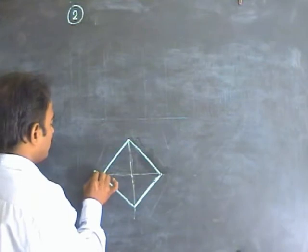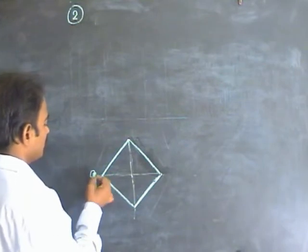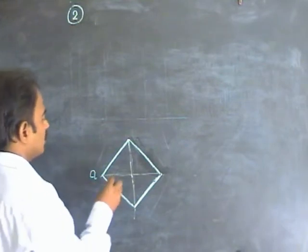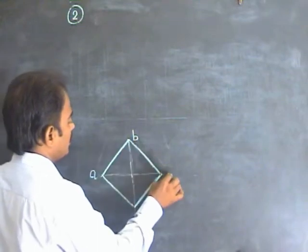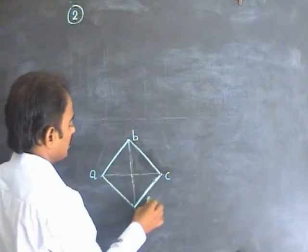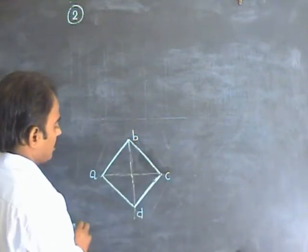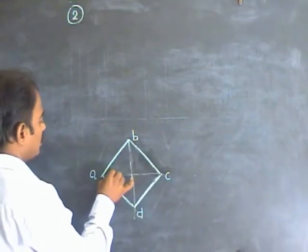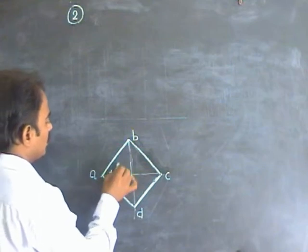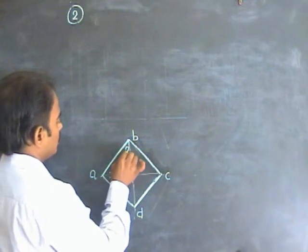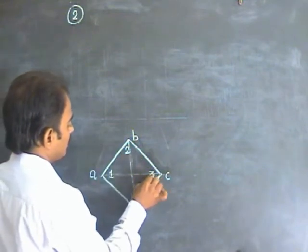So, name this object. The top points are A, B, C, D, and the bottom ones are 1, 2, 3, 4.